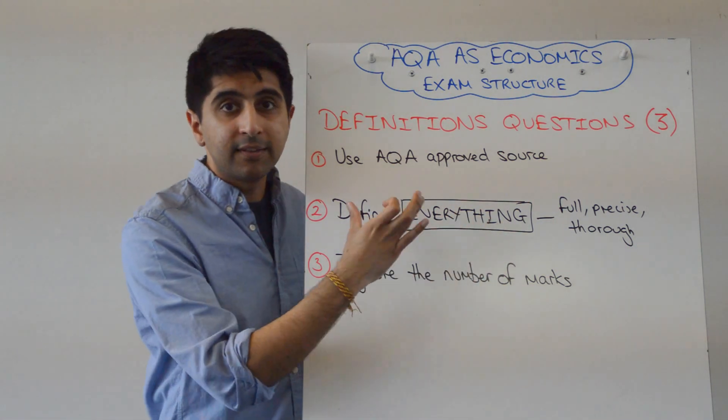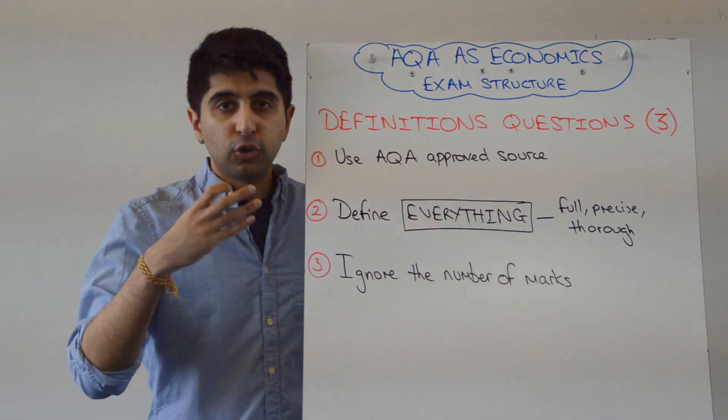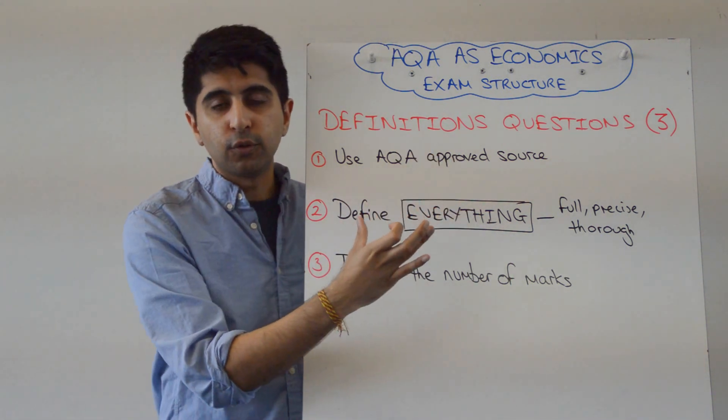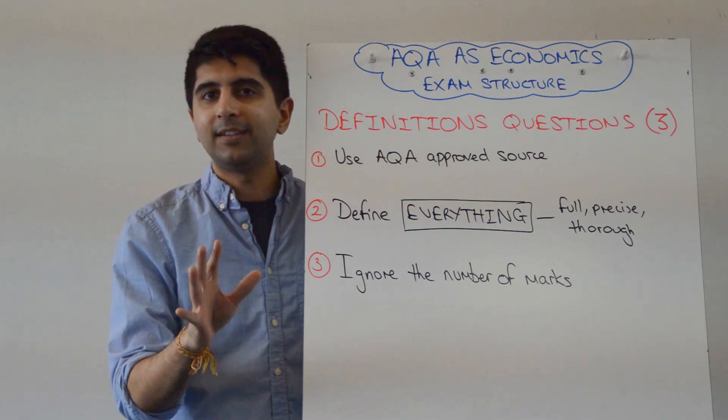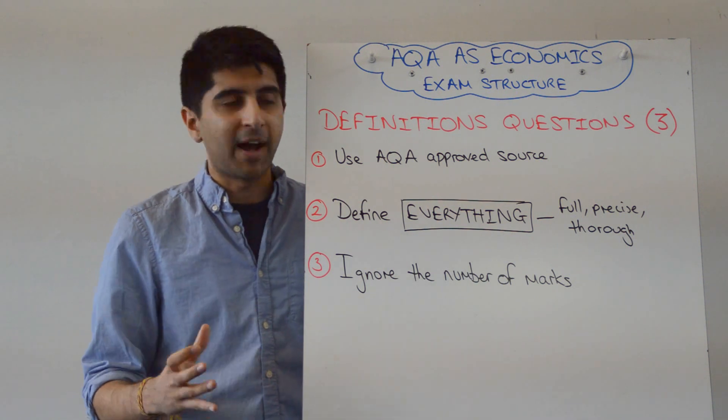Make sure what you're writing is defining everything. Make sure your definition is from an AQA-approved source. Once it's on paper, you're going to score three marks, even if you've only written like five words. Doesn't matter. Ignore the number of marks.